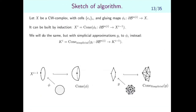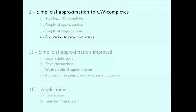Now we can sketch the full algorithm. To build a simplicial complex homotopy equivalent to a given CW complex, consider simplicial mapping cones one by one: at each step, find a simplicial approximation of the gluing map, and take the corresponding simplicial mapping cone.